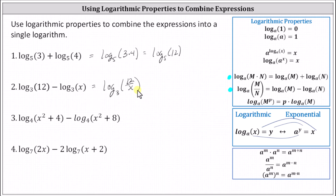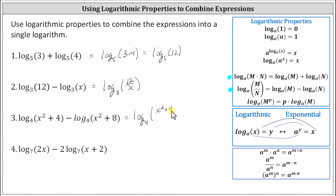Number three, we have log base four of the quantity x squared plus four, minus log base four of the quantity x squared plus eight. This is very similar to number two. Both logs are base four and we have a difference, so we can combine the two logs as log base four of the quotient of x squared plus four and x squared plus eight. Now sometimes we can simplify these quotients and sometimes we can't. X squared plus four does not factor, and the only common factor is one. The same is true for x squared plus eight, and therefore this quotient does not simplify.